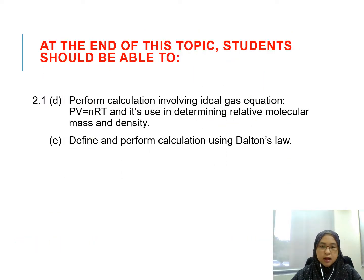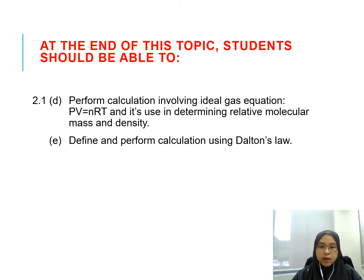At the end of this topic, students should be able to perform calculation involving ideal gas equation, which is PV equals to nRT, and it's used in determining relative molecular mass and density. We will also see the definition and perform some calculation using Dalton's law.